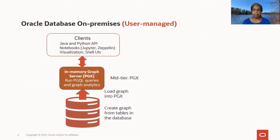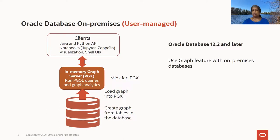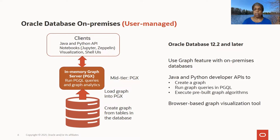Finally, there is the user-managed on-premises option. You create graphs from tables in the database, load your graph into the graph server, installing and deploying the database in your data center, and also installing and deploying the graph server within a mid-tier box or mid-tier container. The client components can be on that machine or a separate machine. This works with Oracle Database 12.2 or later, so if you have an older database version installed, you can still use it to get started with graphs. Once installed, you have access to the Java and Python developer APIs to create a graph, run graph queries, execute algorithms, and visualize graphs.